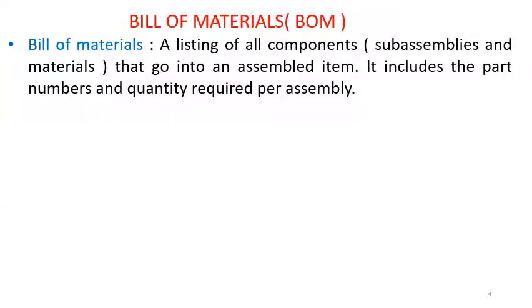What is Bill of Materials? Bill of Materials is a listing of all components that includes subassemblies and materials that go into an assembled item. We have an assembled item which, when broken down into different components, will have a relationship in terms of levels — each component that goes into the parent item is required in a certain quantity. This listing of the entire parent item gives detailed information about the subcomponents as well as the quantity required per assembly.